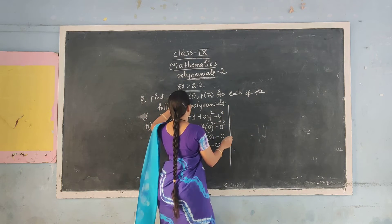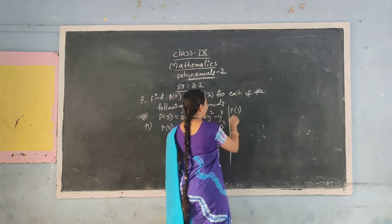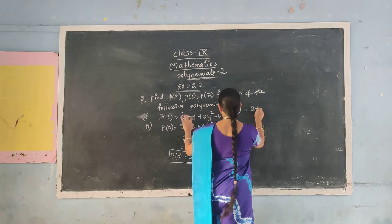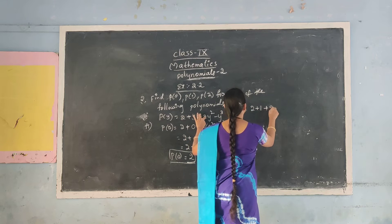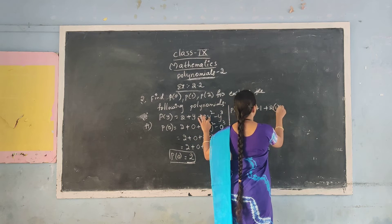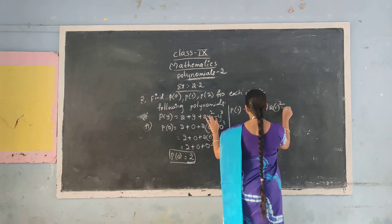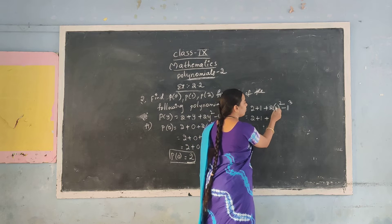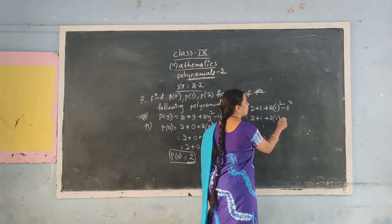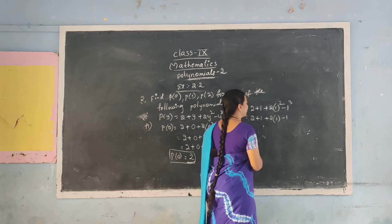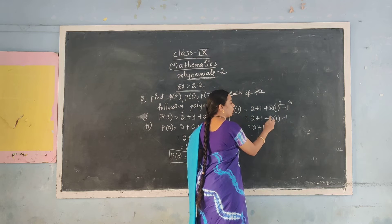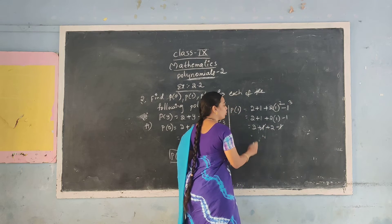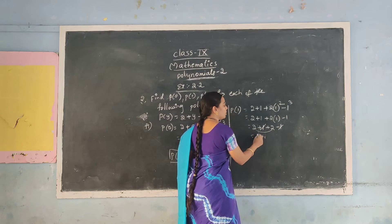Next, substitute y = 1: 2 plus 1 plus 2 into 1 squared minus 1 cubed. First solve the powers: 1 squared = 1, 1 cubed = 1. Remove the bracket and multiply: 2 into 1 = 2, minus 1. Here plus 1 and minus 1 cancel each other. Remaining: 2 plus 2 = 4. So P(1) = 4.